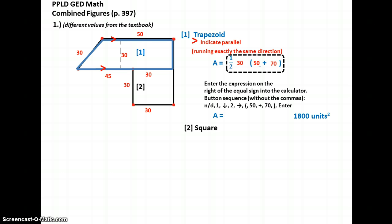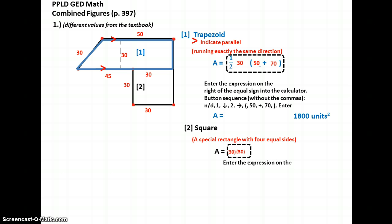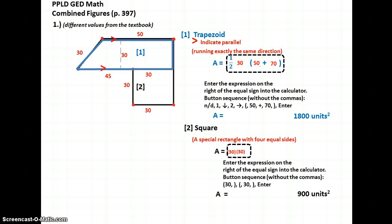What about the area of the square — shape number two — that we broke our figure into? A square is just a special rectangle with four equal sides, much like a cube is a three-dimensional figure where all the edges are the same, but this one is flat. Its area is calculated by the formula: area equals length times width. So we'll plug in the length, 30, then the width, also 30 — it is a square. Everything on the right side of the equal sign is the expression we're going to type into the calculator. There's your button sequence, but you're going to ignore the commas. And we get a value of 900 square units for the square.